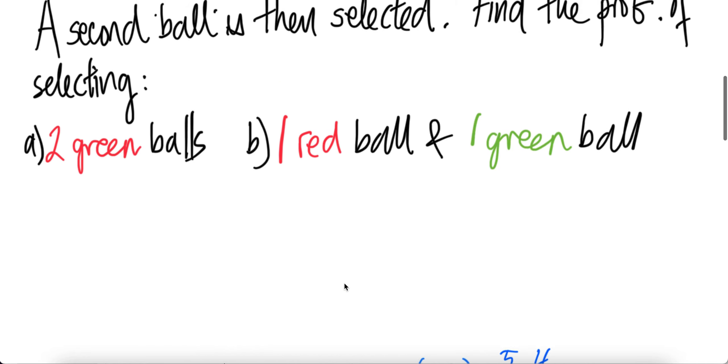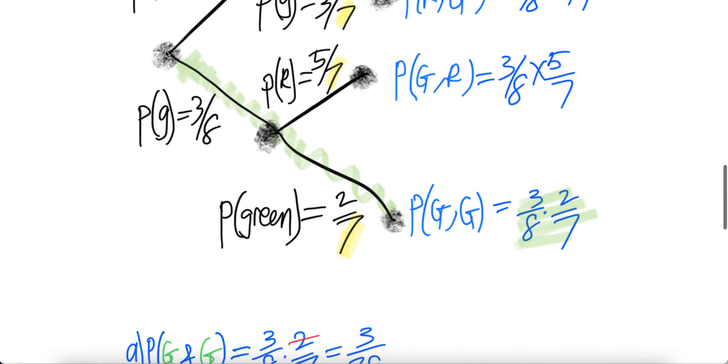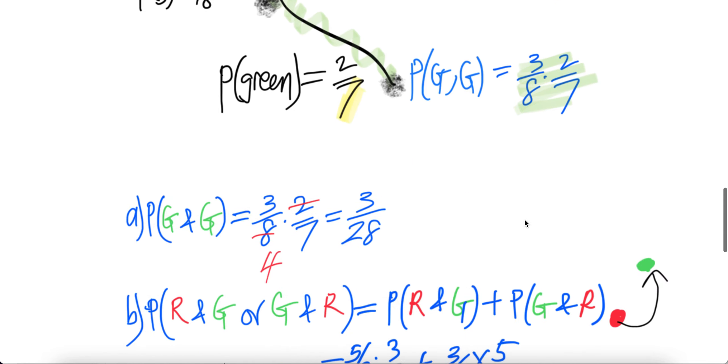Now our goal is to get two green balls. How do you get two green balls? You get green here and then followed by a green. So probability of green, then green. The answer is three over eight times two over seven. Two and eight cancel, you need eight, three over twenty-eight.